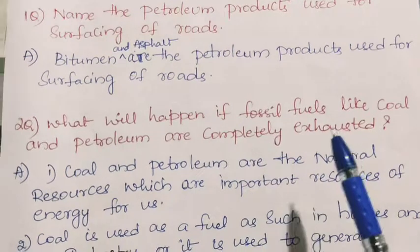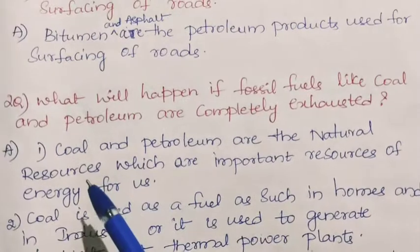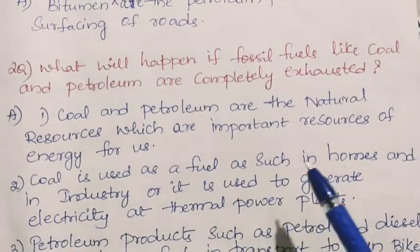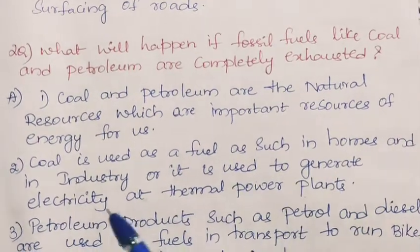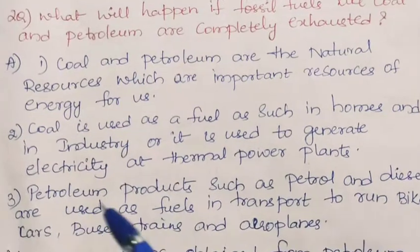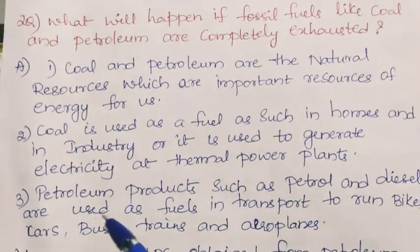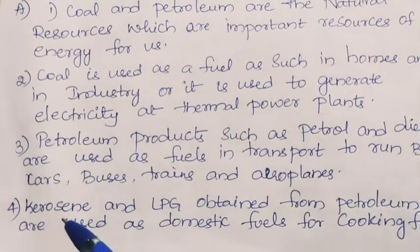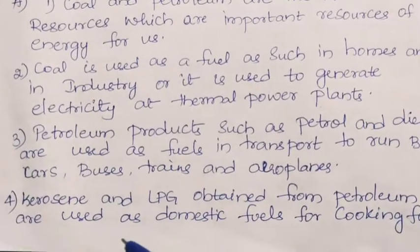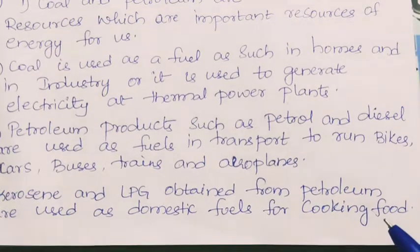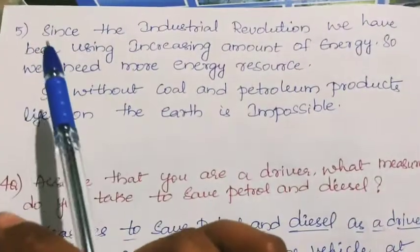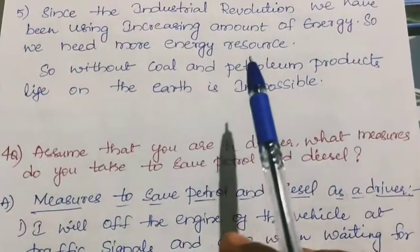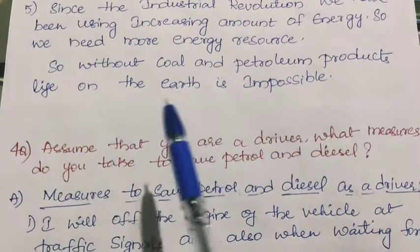Second question: what will happen if fossil fuels like coal and petroleum are completely exhausted? Coal and petroleum are natural resources which are important sources of energy. Coal is used as a fuel in homes and industry and to generate electricity at thermal power plants. Petroleum products such as petrol and diesel are used as fuels in transport to run bikes, cars, buses, trains, and aeroplanes. Kerosene and LPG obtained from petroleum are used as domestic fuels for cooking. Since the industrial revolution, we have been using increasing amounts of energy. Without coal and petroleum, life on earth is impossible.